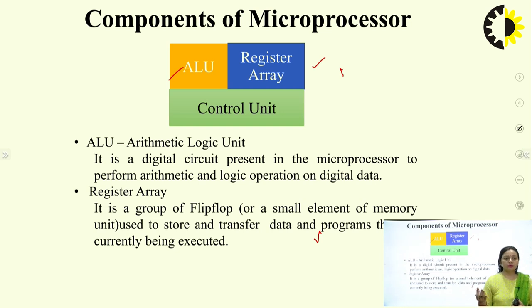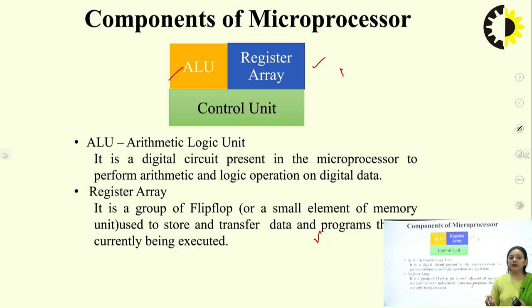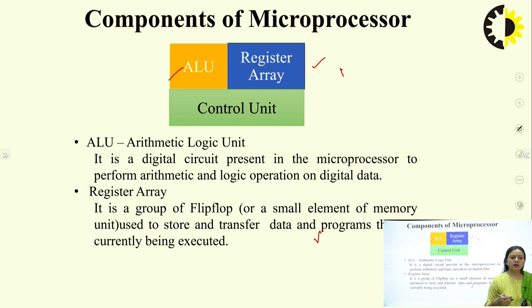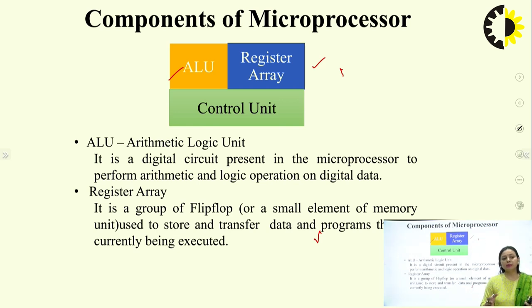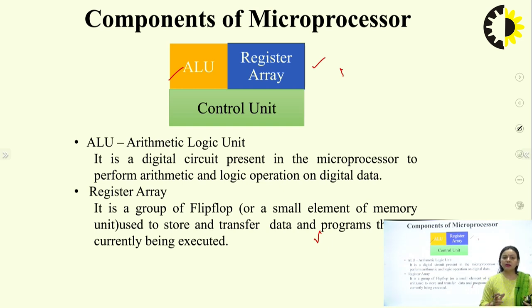The ALU is a digital circuit in the microprocessor that performs arithmetic and logic operations on digital data. The register array is a group of flip-flops — every flip-flop stores a single bit of data. An 8-bit register can store 8-bit data, requiring 8 flip-flops in cascade form. If you have 8 flip-flops in cascaded form, you make one register.